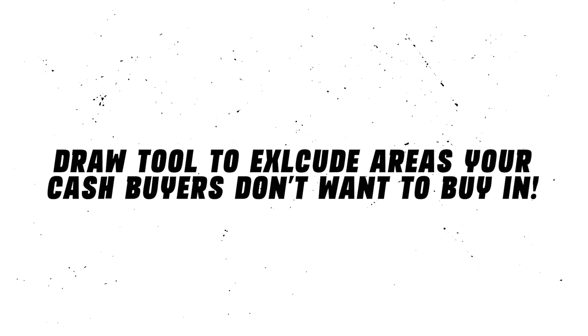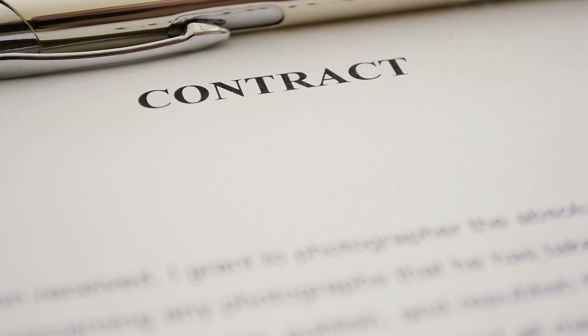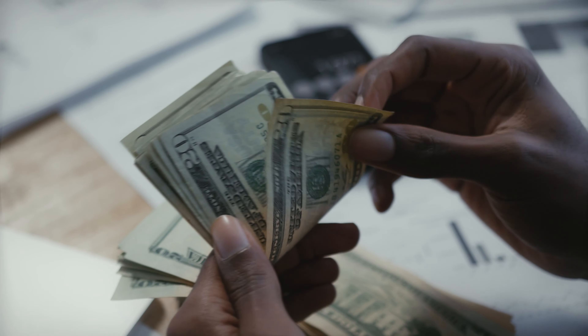This means you can exclude certain areas and zip codes when drawing where you want to get properties, eliminating the areas your buyers don't want. Cash buyers typically only want to buy deals in about 40% to 70% of a city — meaning at minimum 30% of the areas you're pulling a list in is just trash. So many people go 'I'm just going to do all of Harris County Texas' when the average cash buyer in Houston only wants to buy in seven or eight zip codes. Use the draw tool and get rid of zip codes your cash buyers don't want before you spend money on skip tracing or marketing.